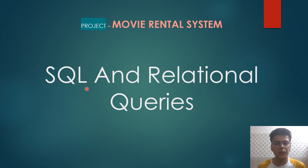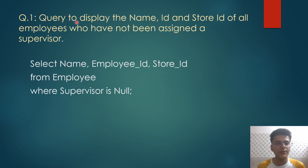Moving forward with our project movie rental system, we are now going to do SQL and relational queries. The first query is to display the name, ID, and store ID of all employees who have not been assigned a supervisor. Here, select name, employee ID, store ID from employee where supervisor is null. If the supervisor is null, that means the employee does not have any supervisor assigned. The resulting output will have all the employees having no supervisor.